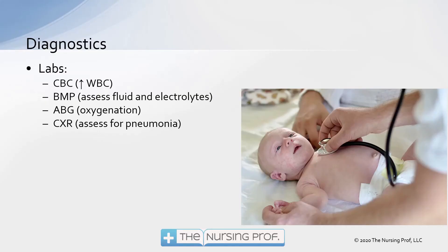Diagnostically, we can look at the CBC, watching for an elevated white blood cell count. We assess the BMP to evaluate fluid and electrolytes, since these small children often have difficulty taking in enough fluid and nutrition while they're having difficulty breathing. An arterial blood gas may be necessary to assess oxygenation and ensure adequate CO2 removal.